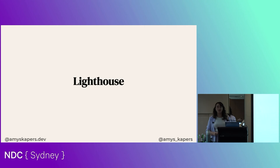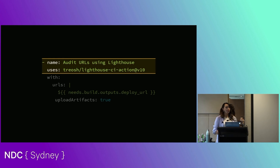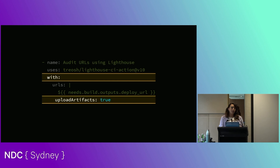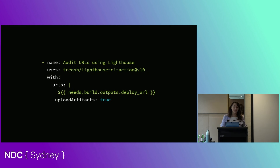The first test I'm going to run is Lighthouse, mainly because it's super easy to spin up. I'll use the Lighthouse CI action package — there are about 50 different Lighthouse GitHub Actions packages, so choose the one you like. I give it a user-friendly name, 'auditing URLs using Lighthouse', pass in some settings — including 'upload artifacts' to upload the report results at the end so I can access them — and then pass in the deploy URL of the website for it to run the test against.